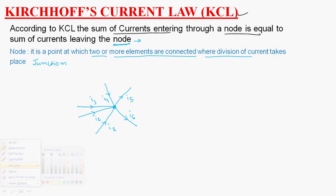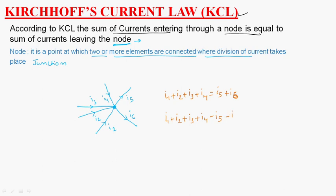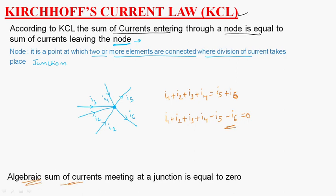So, the sum of the currents entering — I1 plus I2 plus I3 plus I4 — is equal to the currents leaving: I5 plus I6, which equals zero. We can say the algebraic sum of currents meeting at a junction is equal to zero.